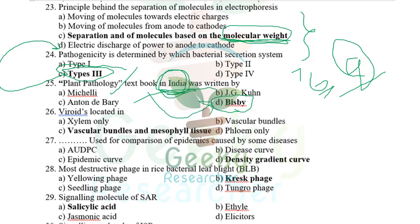Wyrides (tyloses) are located in vascular bundles and mesophyll tissues. I'm not fully certain of this, so please let me know if the answer is wrong.